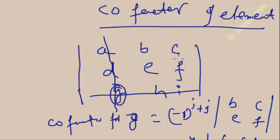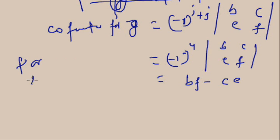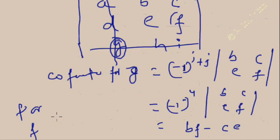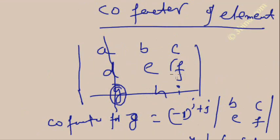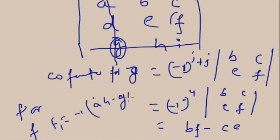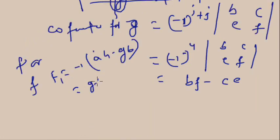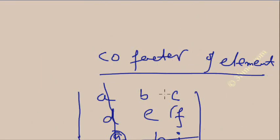Similarly, you can find the cofactor for element F. For F, i is row 2 and j is column 3, so i plus j equals 5, making the sign minus. Remove the row and column in which F is present; the remaining elements are A, B, G, H. The determinant is A·H minus G·B. So the cofactor for F equals minus one times (A·H minus G·B), which equals G·B minus A·H.